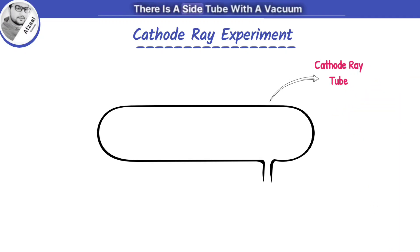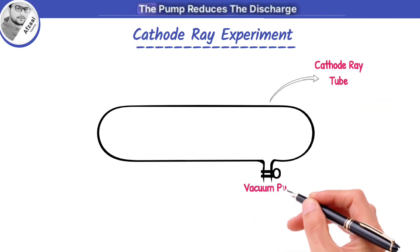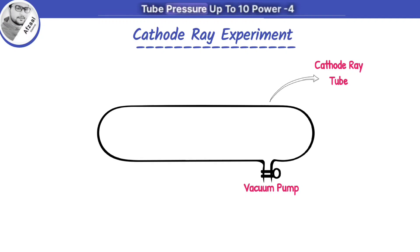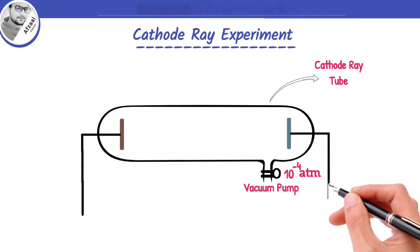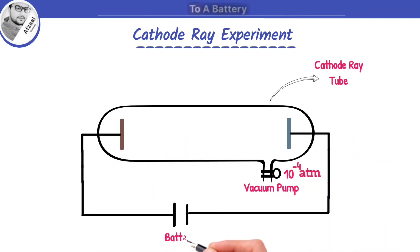There is a side tube with a vacuum pump attached to it. The pump reduces the discharge tube pressure up to 10 power negative 4 atmospheres. It is constructed of two metal plates which serve as electrodes, connected by a high-voltage wire to a battery.